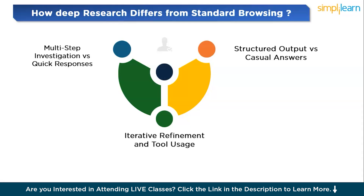Deep Research essentially mimics the process a researcher would undertake when diving into a complex topic, ensuring that each piece of information is checked, synthesized, and properly referenced. ChatGPT browsing, on the other hand, delivers instant replies based on the most relevant information it can pull from its knowledge base, making it more suited for casual questions or quick clarifications, but less effective for detailed research tasks.